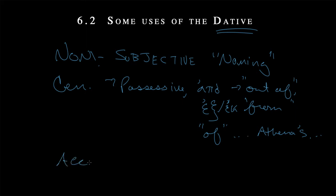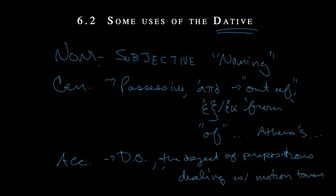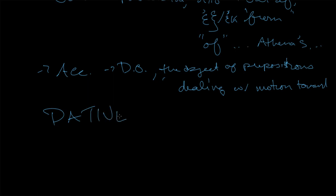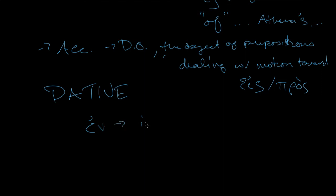And then we had the accusative, which tended to be a direct object, but was also the object of prepositions. Sorry, my cursive is not so good tonight. The object of prepositions dealing with motion towards. So that's what we had so far on the other cases. Nominative, genitive, and I skipped dative here and then went straight to the accusative. So let's talk then about the dative. What did we have so far? In terms of prepositions, I should also say that accusative went with εἰς and also went with πρός. Dative went with ἐν and could mean in.